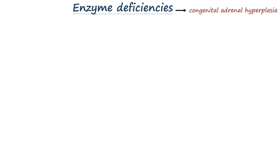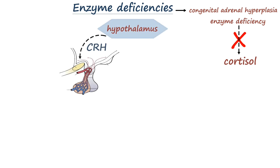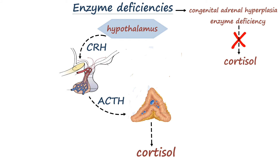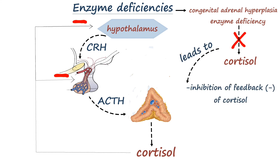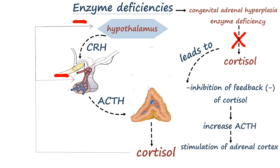Deficiency of any enzyme involved in cortisol synthesis leads to a condition known as congenital adrenal hyperplasia. When there is a deficiency of an enzyme in cortisol synthesis, cortisol cannot be synthesized. Since cortisol is the major negative regulator providing negative feedback to the hypothalamus-pituitary-adrenal axis, its deficiency inhibits this feedback, leading to increased production of ACTH, stimulation of the adrenal cortex, and ultimately adrenal hyperplasia.